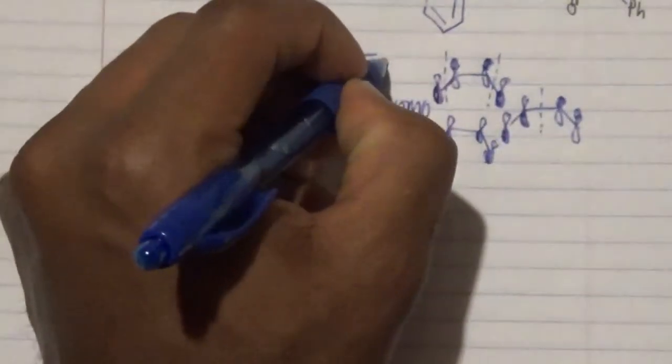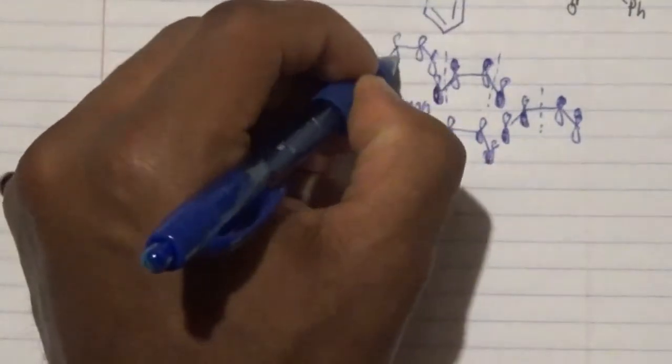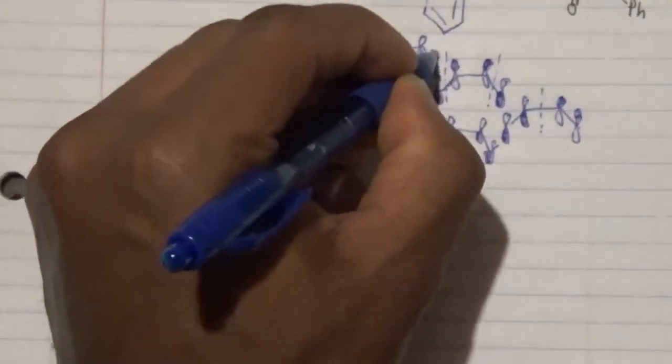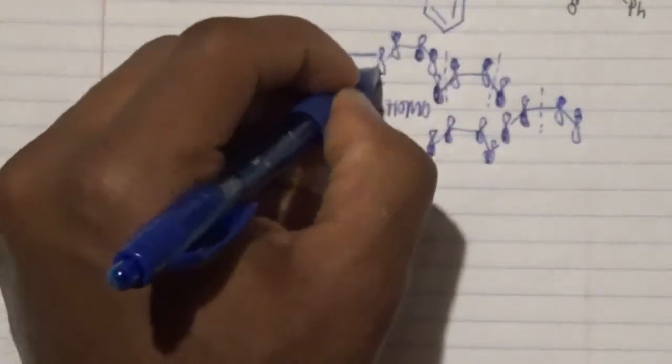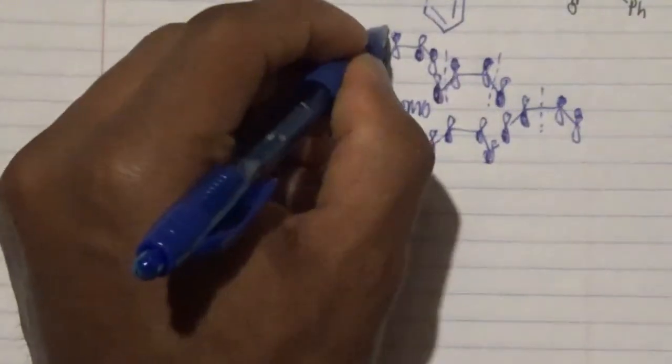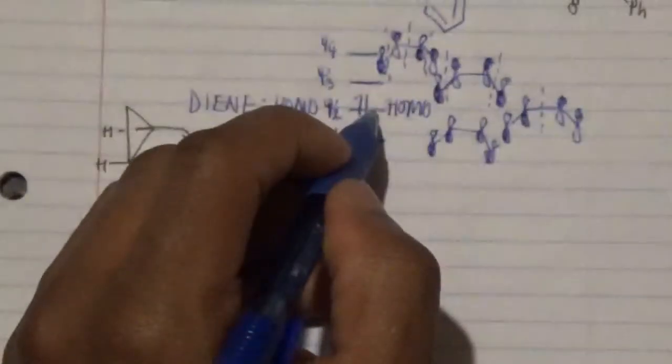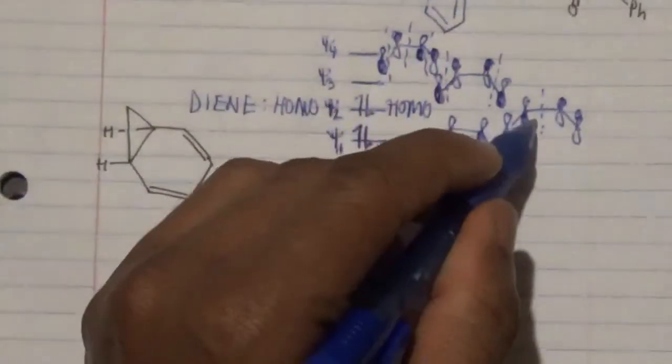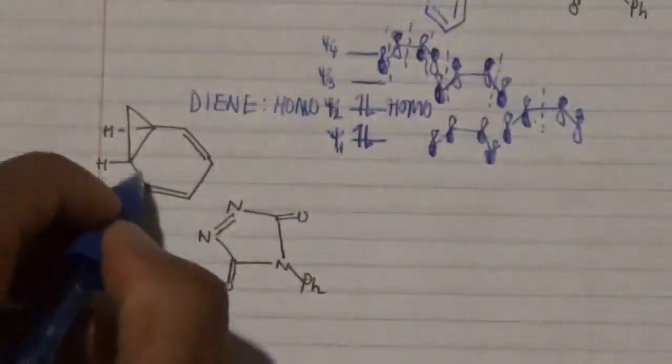And then lastly our number 4, psi 4, is going to have all out of phase. So what that is is this shaded, that unshaded, this shaded, and that shaded. So no overlap, no overlap, no overlap. So therefore we are going to choose our HOMO to be that particular orbital overlap over there.